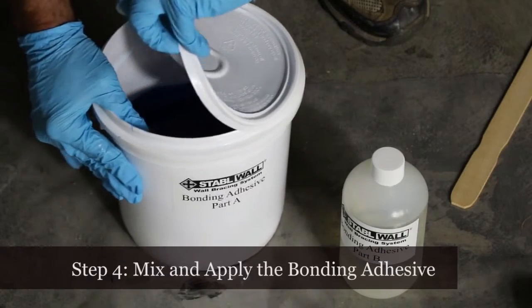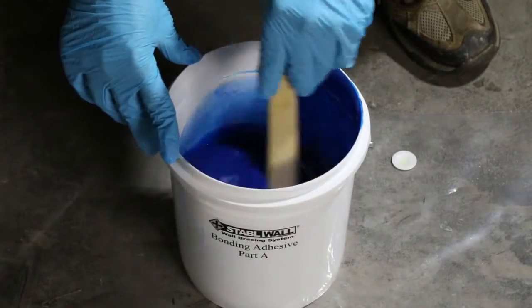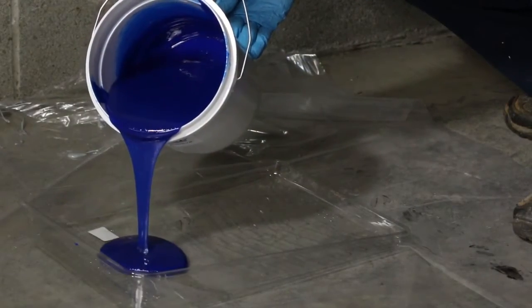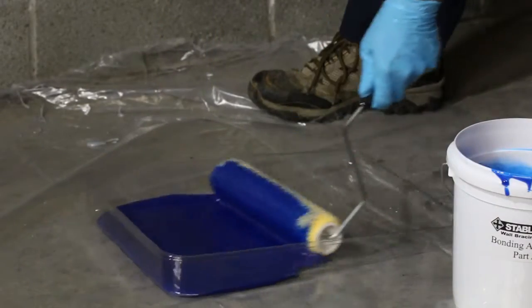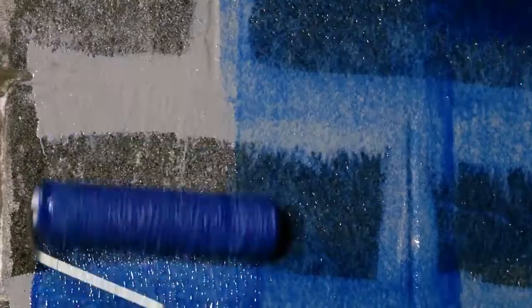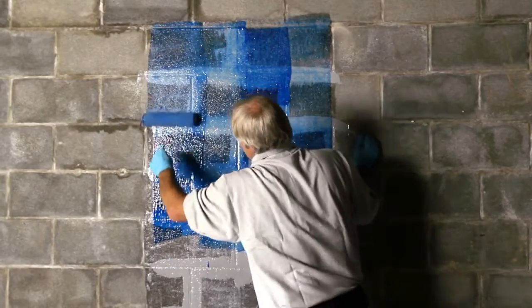Step four is to mix and apply the bonding adhesive. Roll it on with the remaining paint roller cover. It goes on just like paint. Use about one quarter of the supplied bonding adhesive if you're installing one sheet of carbon fiber and one half of the bonding adhesive if you're installing both sheets.